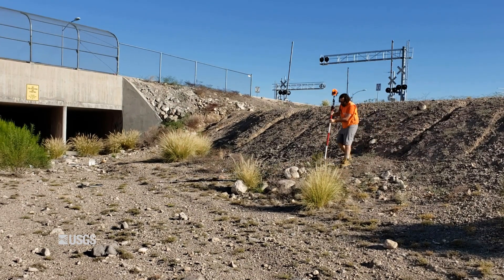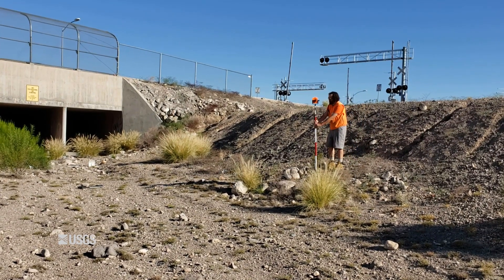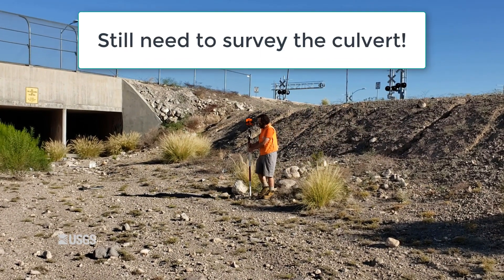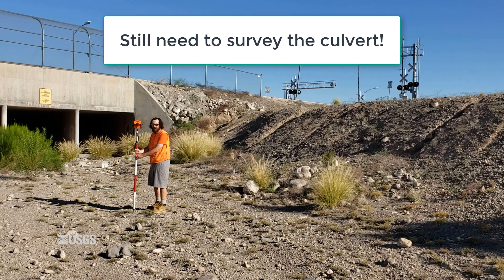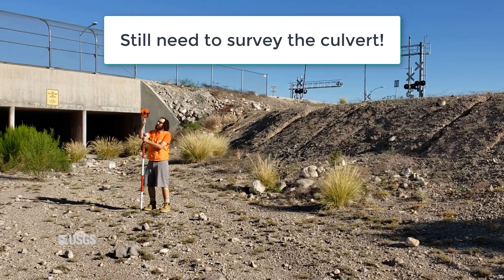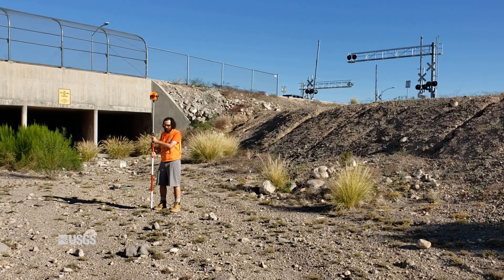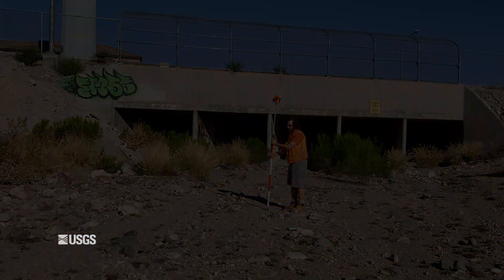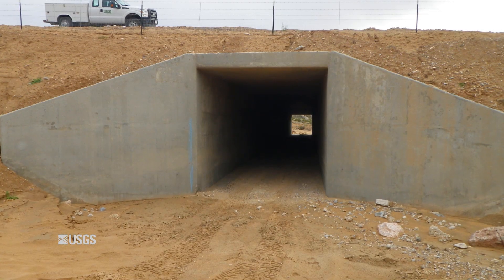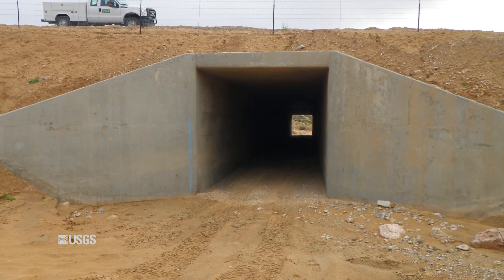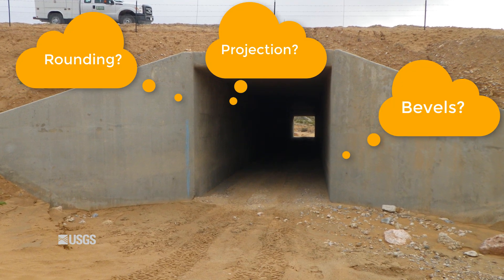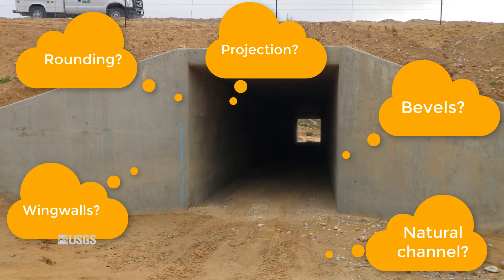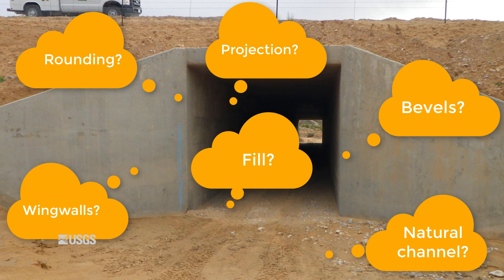So you have surveyed the high water marks and the approach cross section of the culvert. You still need to survey the culvert itself. At first glance, it may seem easy — it's just a concrete box or a metal pipe. However, once you start looking closely, you can see rounding or bevels, projections and wing walls, natural channel bottoms or fill in the culvert.